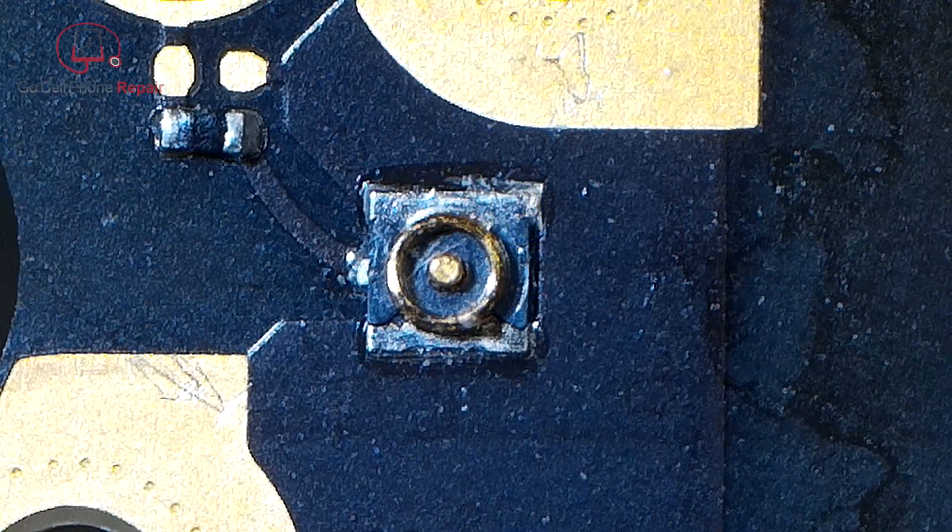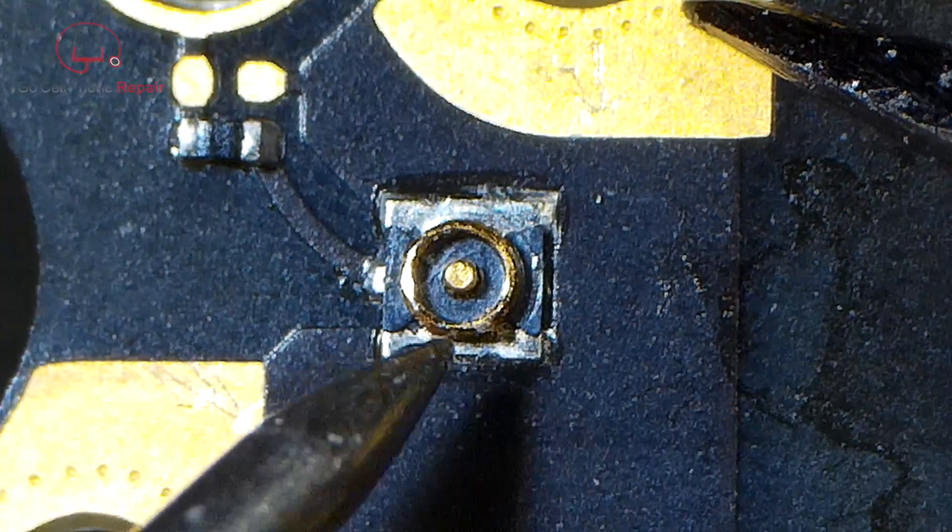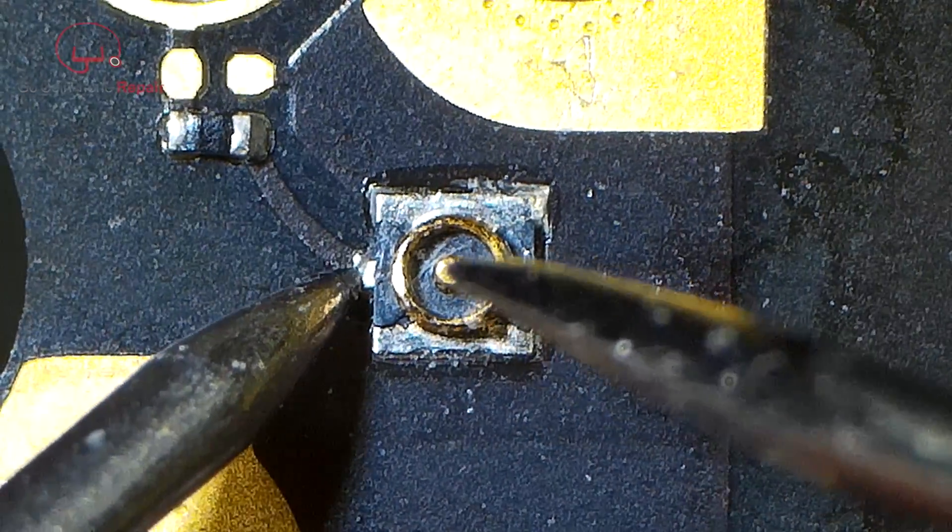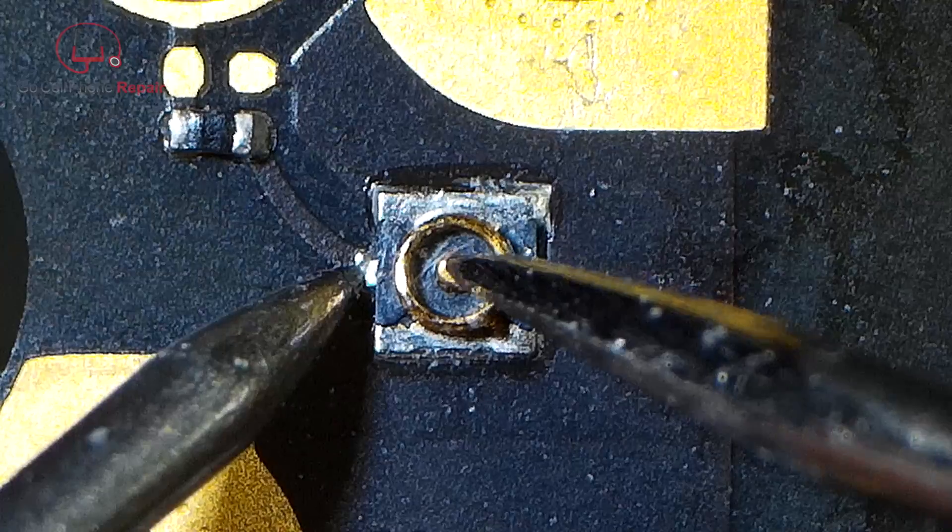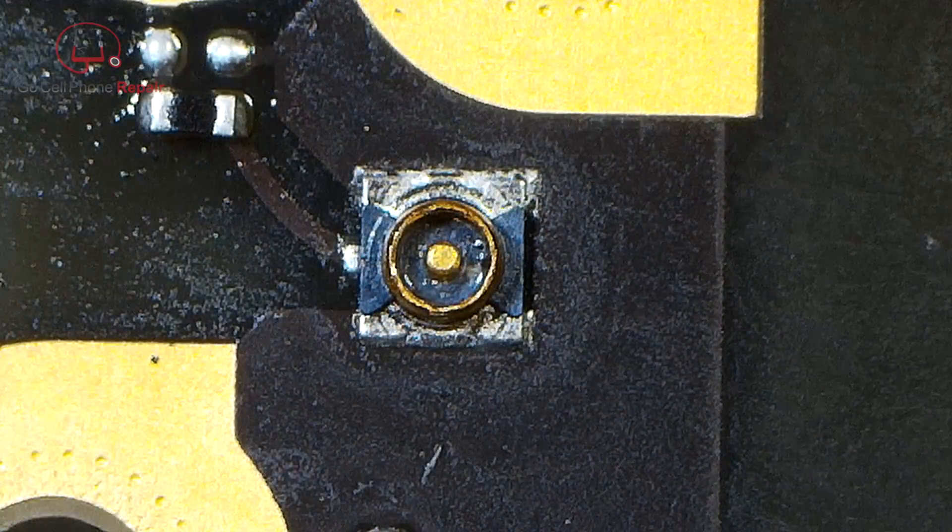When we finish up, we want to make sure that center pin actually has continuity to the component up towards the top left-hand corner, and that it's not making contact with the outer part of the antenna, which is that circular area. You will also want to have a multimeter to check this out when you're done.